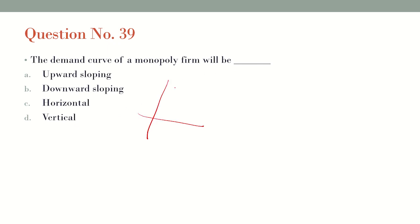Question number 39: What will the demand curve of a monopoly firm look like? For a monopoly firm, the demand curve will always be negatively sloped. We take quantity demanded on the x-axis and price on the y-axis — as the price increases, the demand for the goods decreases.